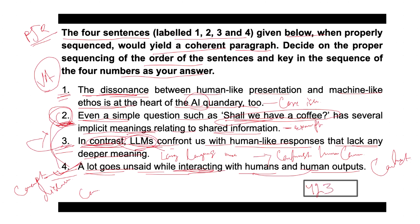The last sentence is sentence one. It covers the discussion by stating that the dissonance between human-like presentation and machine-like ethos is at the heart of the AI quandary — addressing the core issue of the mismatch between AI's human-like appearance and its lack of deeper meaning. So the final appropriate sequence is 4, 2, 3, 1. I hope you understood this. Thank you.